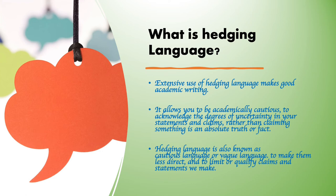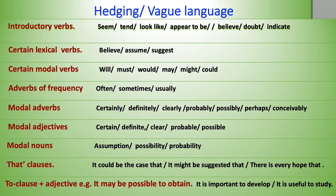Hedging language is extensively used in this type of writing. The verb hedge means to avoid making a clear, direct statement or committing yourself to a particular decision. It allows you to be academically cautious, to acknowledge the degrees of uncertainty in your statements and claims, rather than claiming something is an absolute truth or fact. Hedging language is also known as cautious language or vague language, used to make statements less direct and to limit or qualify claims. Hedging is achieved in many different ways including introductory verbs, lexical verbs, modal verbs, and that-clauses. Learn the examples shown here.